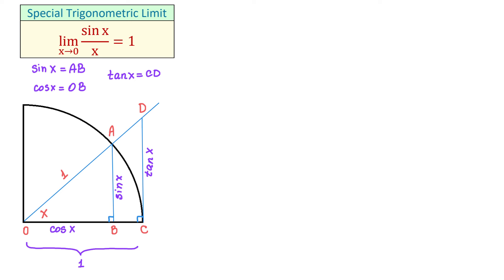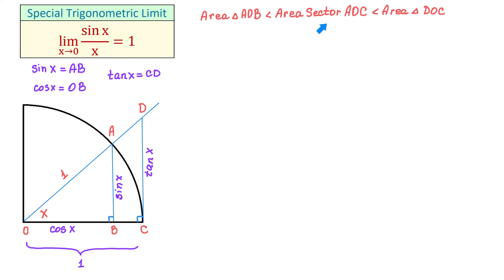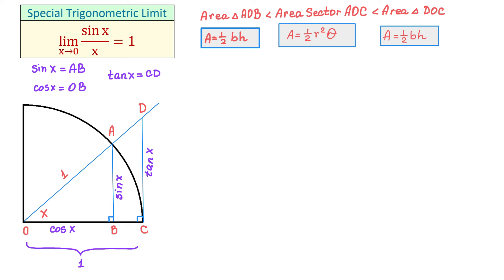Now once we have these dimensions established, let's take a look at the following figures: triangle AOB, sector AOC, and triangle DOC. Comparing their areas, the area of sector AOC is greater than the area of triangle AOB but is less than the area of triangle DOC. To find the area of each triangle we use the formula A equals one-half times base times height, and to find the area of a sector the formula is one-half times the radius squared times the angle theta.